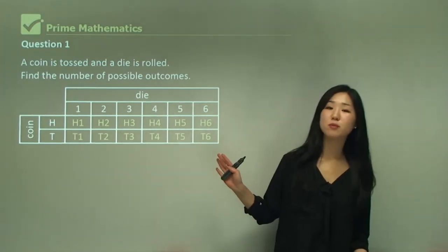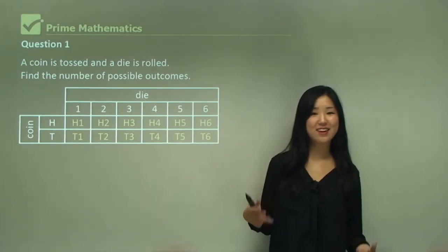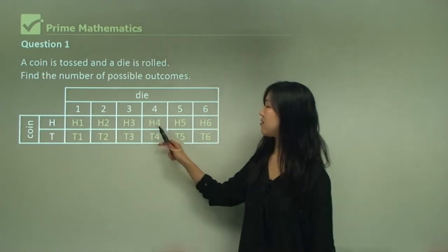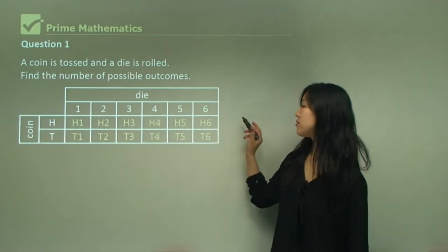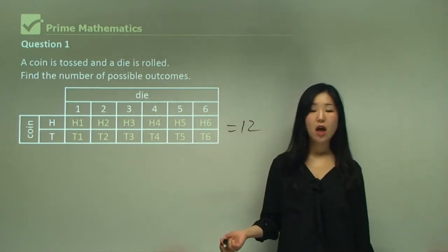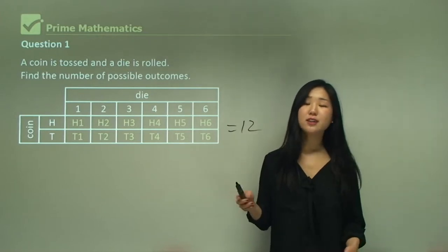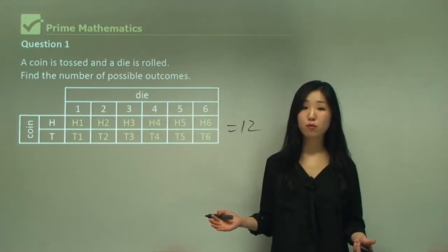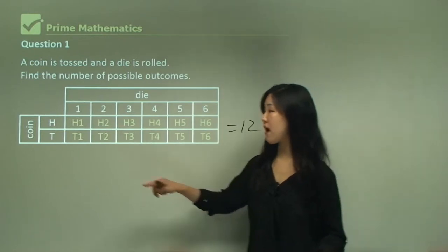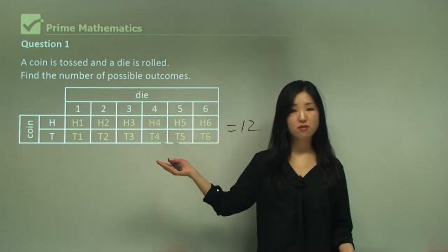Makes sense? These are all the possible outcomes. Let's use our counting technique — counting them up gives us 12 possible outcomes altogether. In the introduction I told you that if you want to find the total number of possible outcomes, you just multiply the outcomes of the first event by the outcomes of the second event.